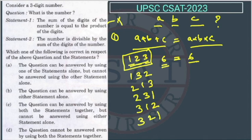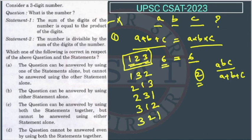The second statement says the number ABC is divisible by the sum of its digits, that is divisible by A plus B plus C. By using Statement 2 alone, we cannot find the number either, because nothing specific is given. If we combine both statements, the digits are 1, 2, 3 and the sum is 6, so the number must be divisible by 6.